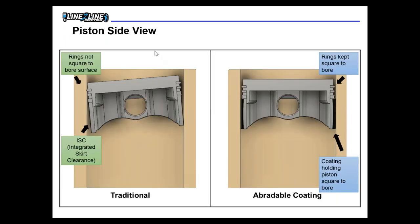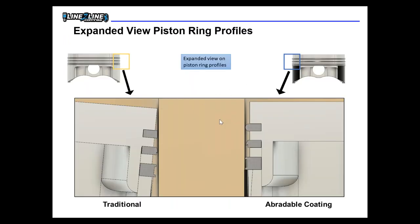Looking at the side view — same thing, you've got integrated skirt clearance down here, and up here your crevice volume. Your top land has to be small because of all that rock, or it'll hit. If we can keep the piston square, everything is better. You can actually make your top land more proud, and your rings don't have to run all over the place to keep up with the sealing job.